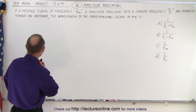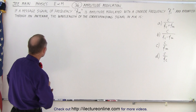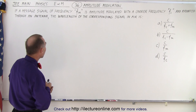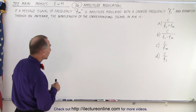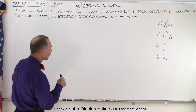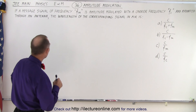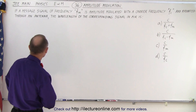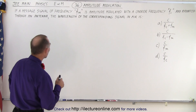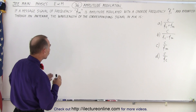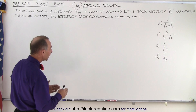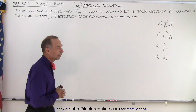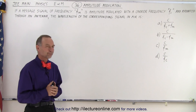It says: if a message signal of frequency f_m is amplitude modulated with a carrier frequency f_c and radiated through an antenna, the wavelength of the corresponding signal in air is — and they give us four possible answers.